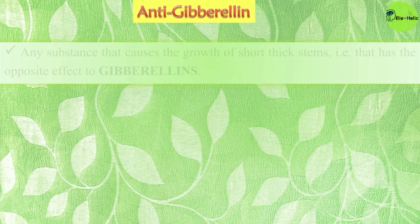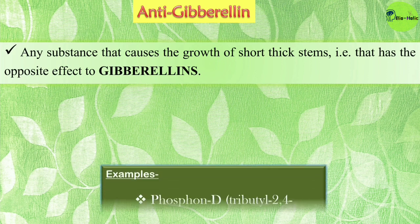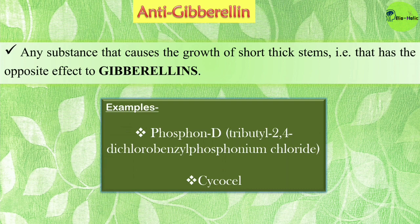Now, what are anti-gibberellins? Like anti-auxins, anti-gibberellins are any substances that cause the growth of short, thick stems — that is, they have the opposite effects of gibberellins. Examples include Phosphon D, or tributyl 2,4-dichlorobenzyl phosphonium chloride, and CCC (cycocel).